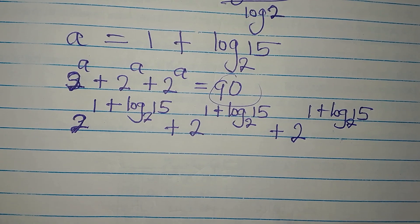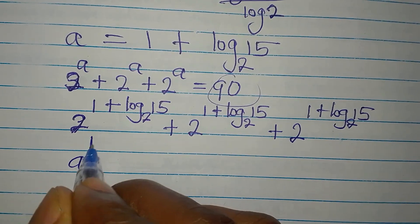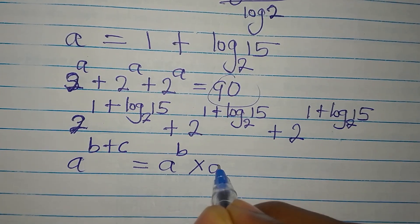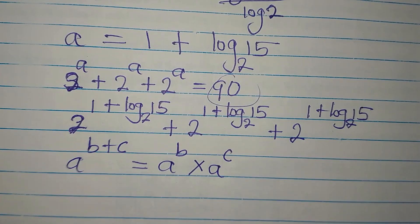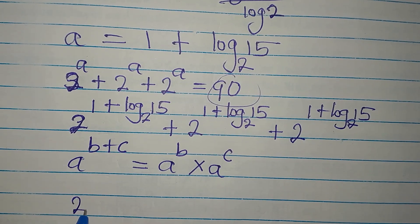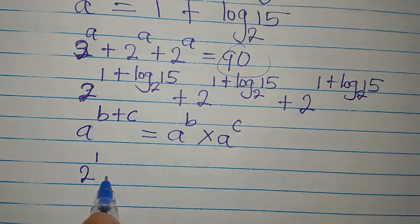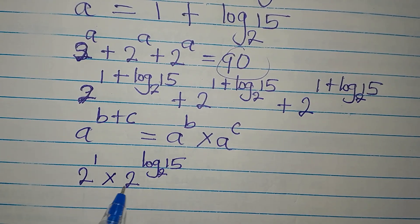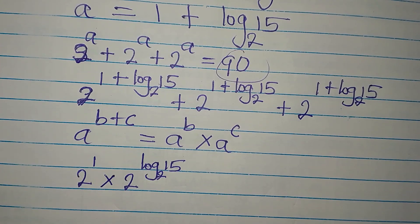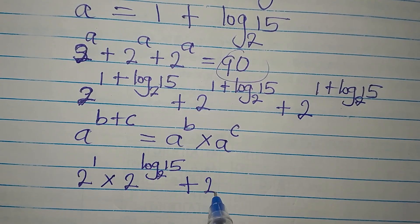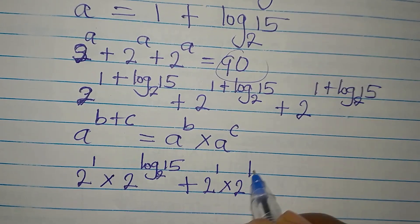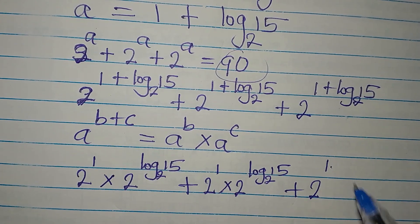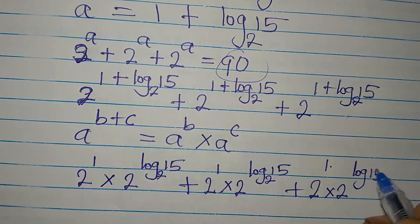We apply the index law: a to the power of (b + c) equals a^b times a^c. So each 2 to the power of (1 + log₂15) becomes 2 to the power of 1 multiplied by 2 to the power of log₂(15). We have this in all three places.